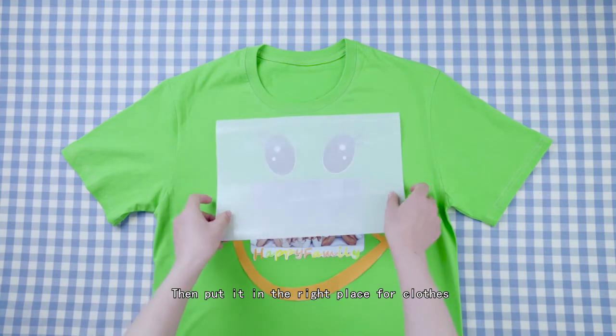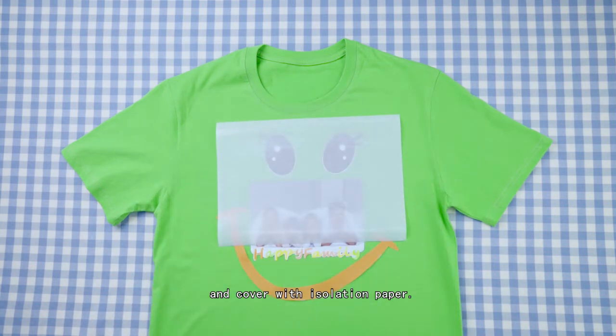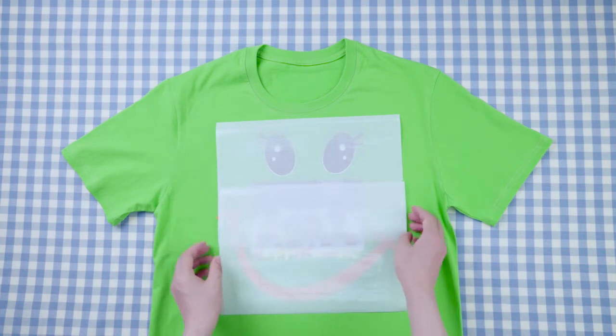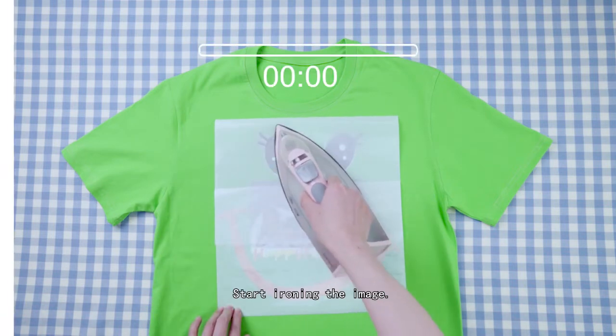Then put it in the right place for the clothes and cover with isolation paper. Start ironing the image.